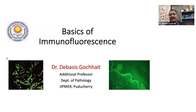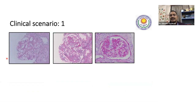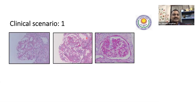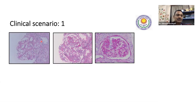This webinar will serve the purpose of helping you answer those questions. First I will show you some case scenarios, then we will go to our session — it will be a very brief session, so please listen attentively. First clinical scenario: I have given here some pictures of three kidney biopsies. Kidney biopsy is one of the important areas where we need immunofluorescence. The other most important area is skin vesiculobullous disorders.